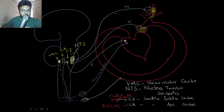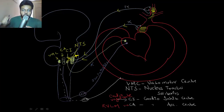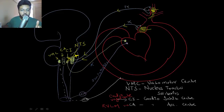Once these are stretched, it stimulates the ninth and tenth nerve. Once the ninth and tenth nerve are stimulated, it activates the nucleus tractus solitarius. Once nucleus tractus solitarius is activated, it sends signals to the cardio inhibitory center to get activated — because your blood pressure has increased, your goal is to decrease blood pressure. That's why you stimulate the cardio inhibitory center, which slows down the heart with the help of the vagus.